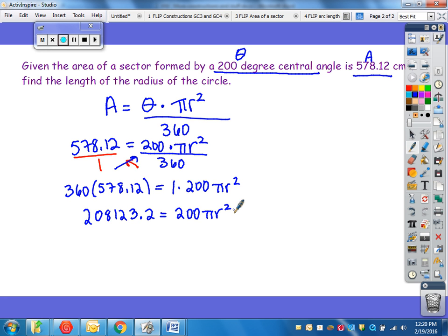Well, I'm trying to get the r by itself, so I need to get rid of this 200 pi, and remember that's 200 times pi times r. So that's multiplied, so the opposite of that would be to divide. So I'm going to divide both sides by 200 pi. The 200 and the pi both cancel out and leave me with r squared,